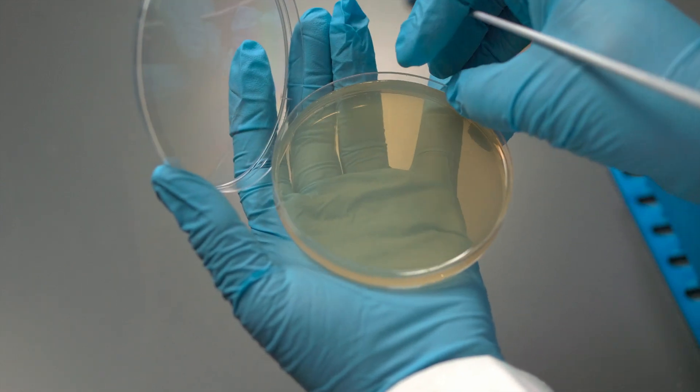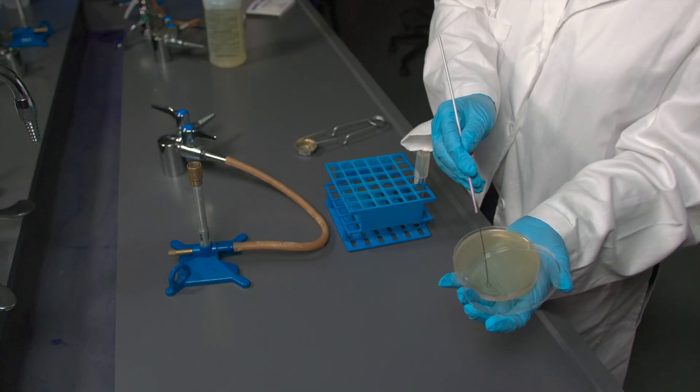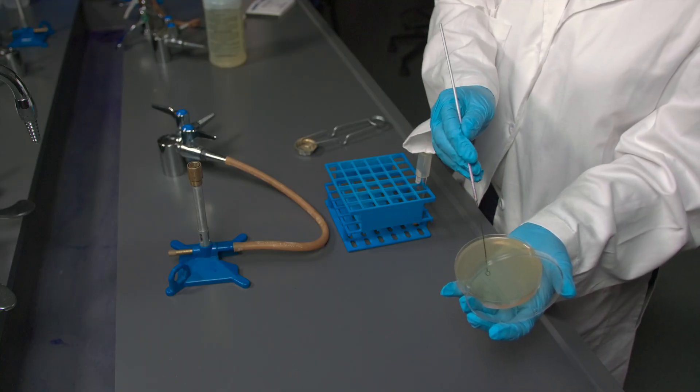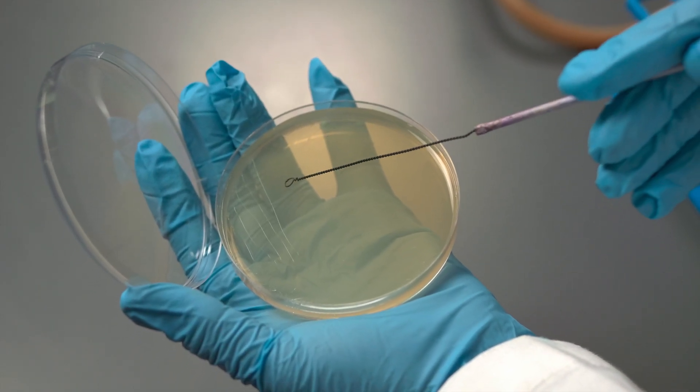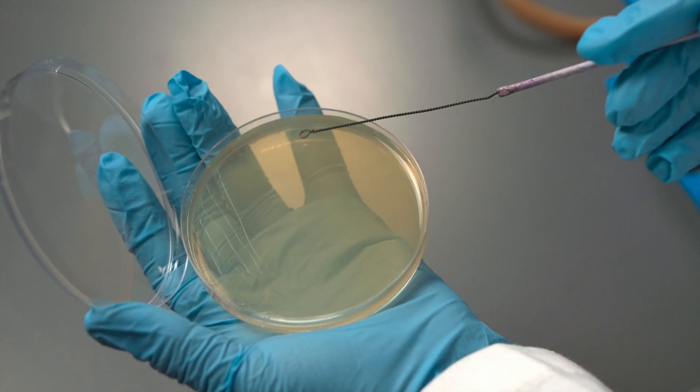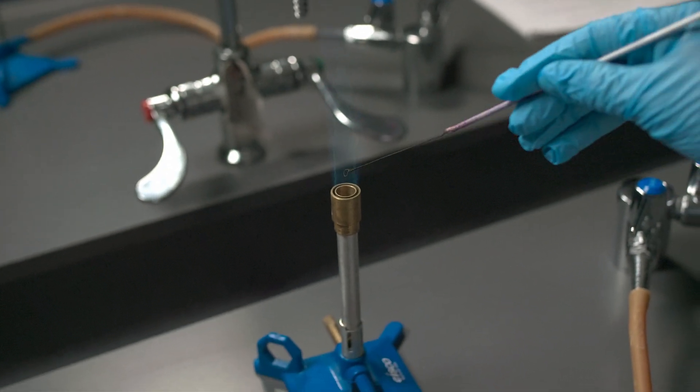Turn the plate 90 degrees once more and touch the loop to the edge of the newer streak lines once. Streak the plate five times again without touching the two sets of streak lines you've already made. Flame the loop.